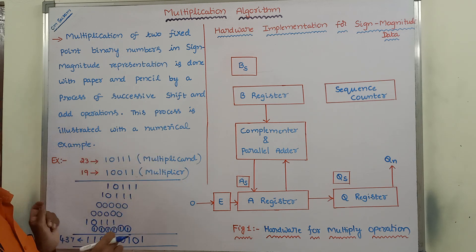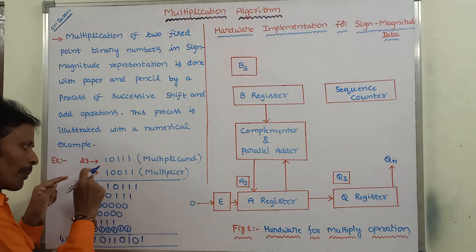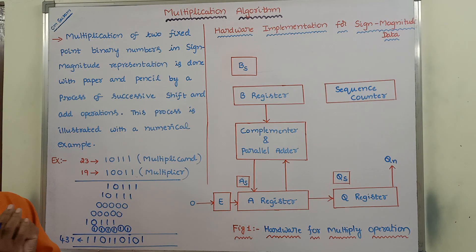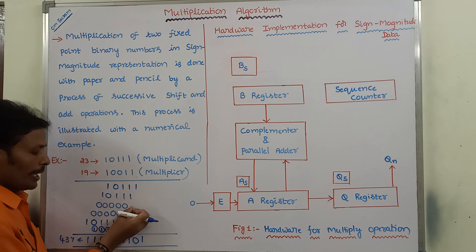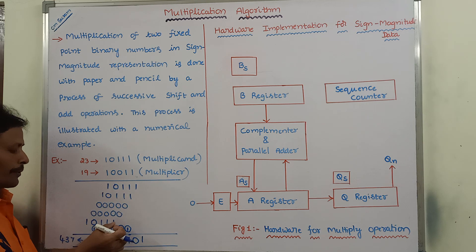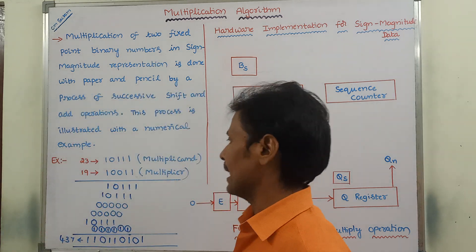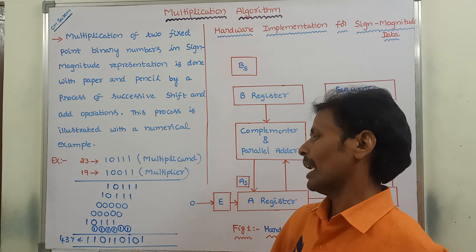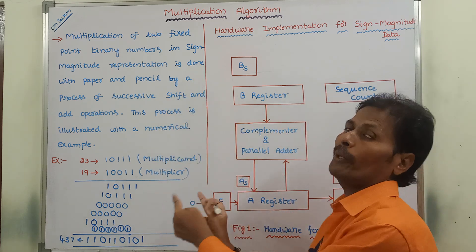In this way we perform normal multiplication with paper and pencil by a process of successive shift and add operations. Here we have to perform shift operations at each step. By this successive process of shift and add operations, we get the product of 23 and 19 as 437, whose binary equivalent is 110110101.